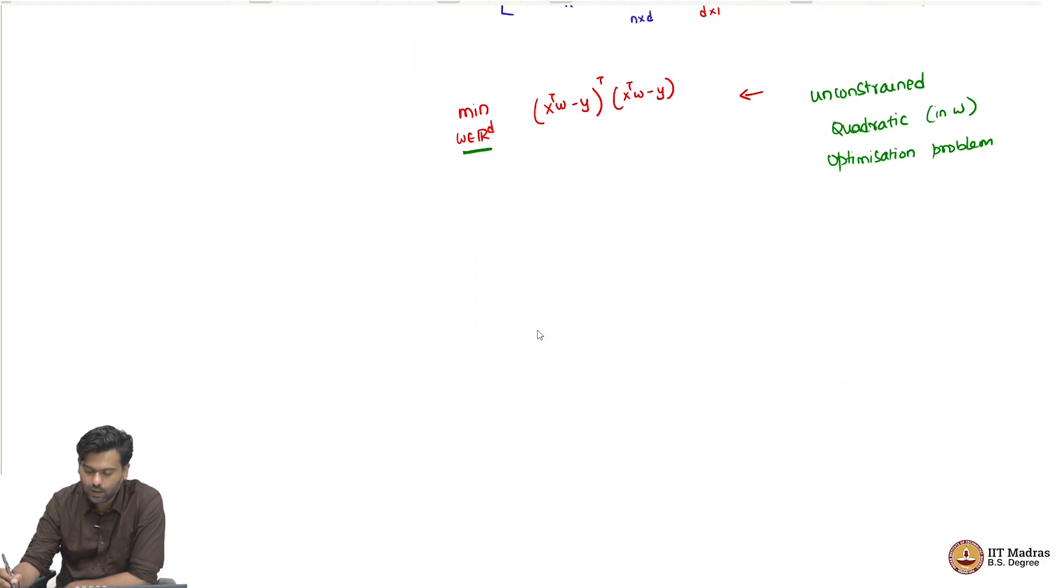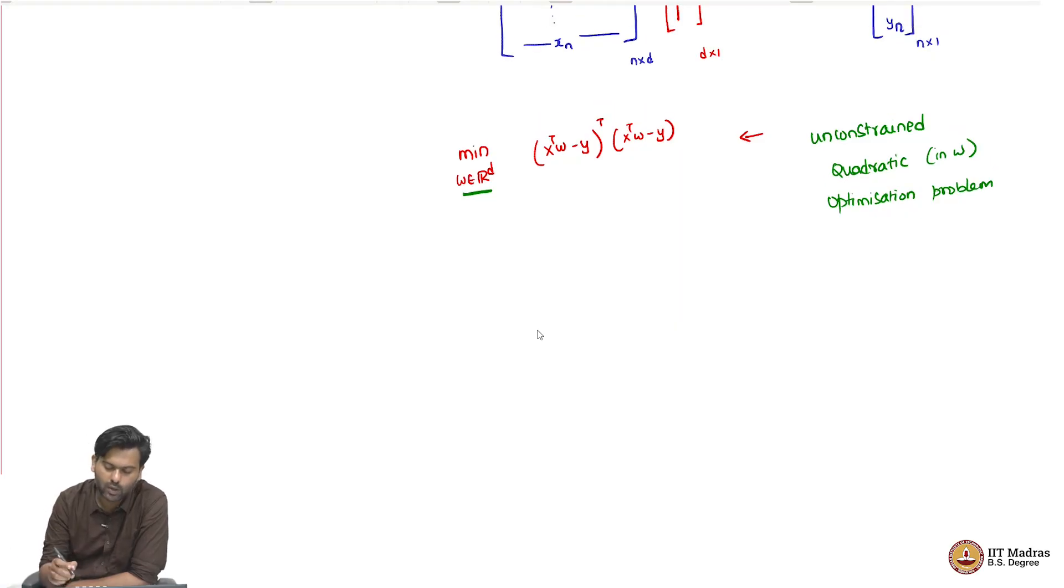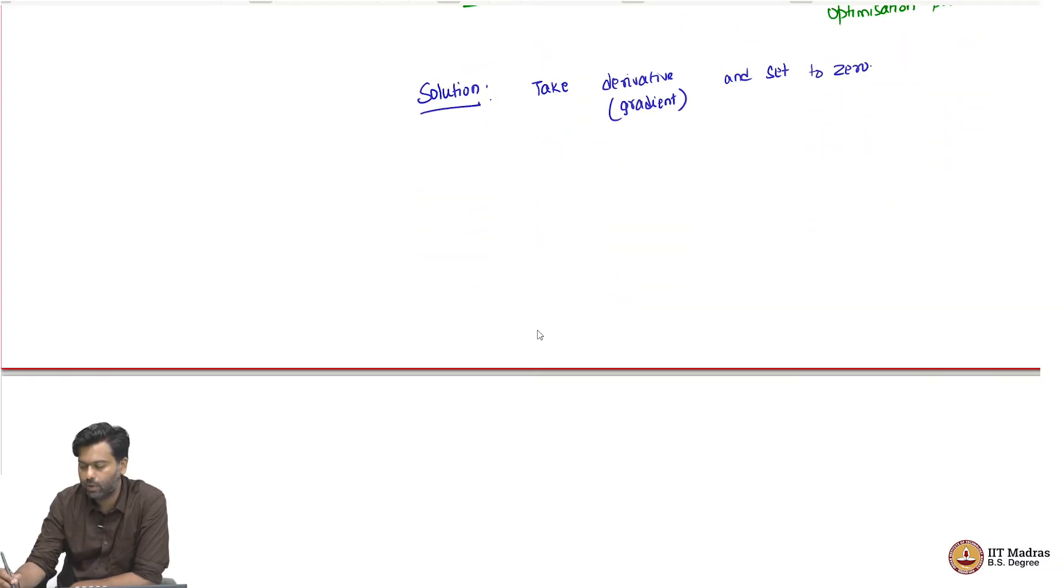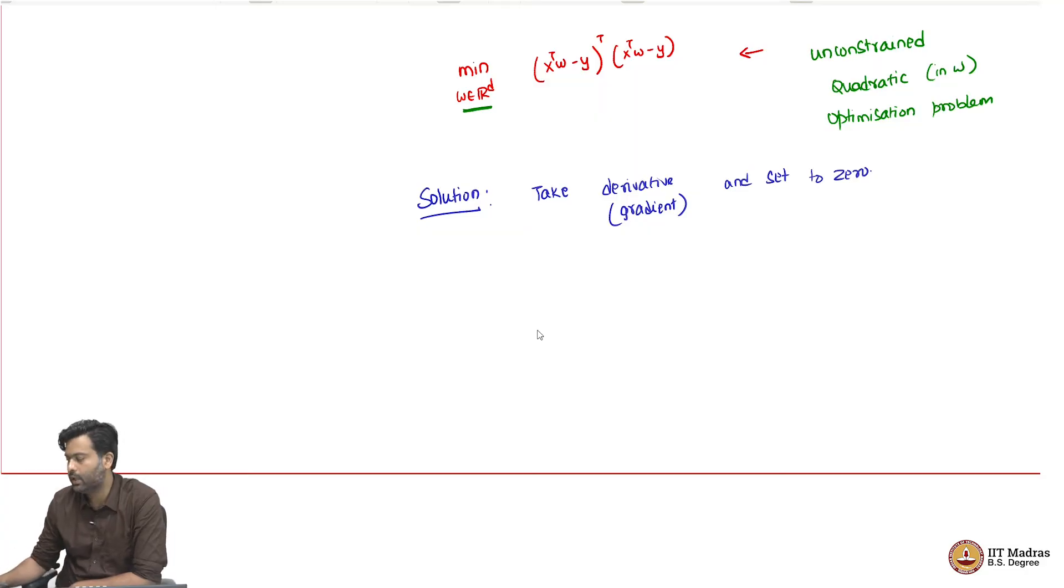How can we find the W that has the smallest value? Well, because it is unconstrained and quadratic, the simplest way is to take the derivative with respect to W, which in higher dimension is just the gradient, and set to 0 and see what happens. That should give us the optimal W. In some cases it might give you some closed form solution. In some cases it might not, but let us see what happens in this case.